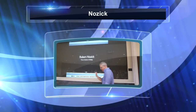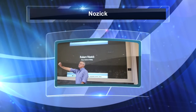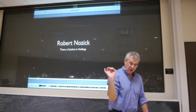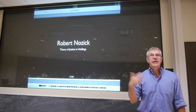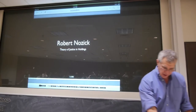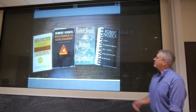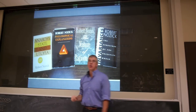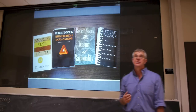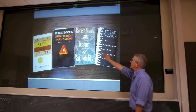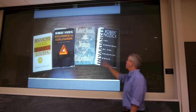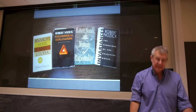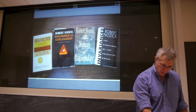We're going to be looking at Nozick's theory of distributive justice. Nozick was a professor at Harvard for his entire career. He was a colleague of John Rawls and developed his theory in part as an alternative to the Rawlsian picture. He wrote a variety of influential books. The first one we're going to be discussing is Anarchy, State, and Utopia, which won a National Book Award in 1974, but also Philosophical Explanations, The Nature of Rationality, and The Structure of the Objective World. He died tragically when he was really quite young.